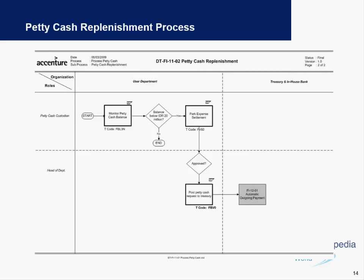We also have the petty cash replenishment process, where a petty cash custodian monitors petty cash balances in the system. If any balances fall below the required amount on a monthly or quarterly basis, this is noted to the head of the department, who is responsible for posting any expense settlements or requesting petty cash payments from the treasury department. The treasury department will then make the required outgoing payments under petty cash.